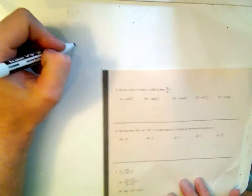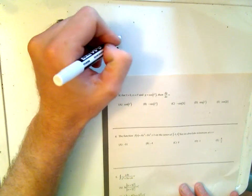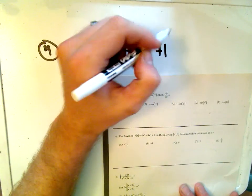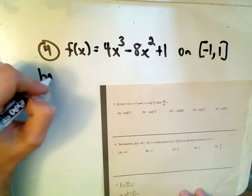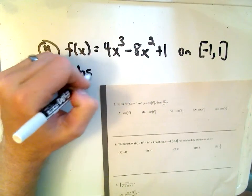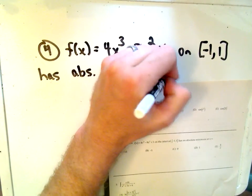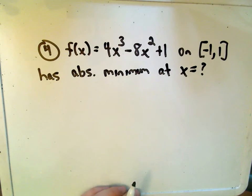f of x equals 4x to the third minus 8x squared plus 1 on the interval negative 1 to 1, has an absolute minimum. So, it has an absolute minimum at what x-coordinate, is the question.